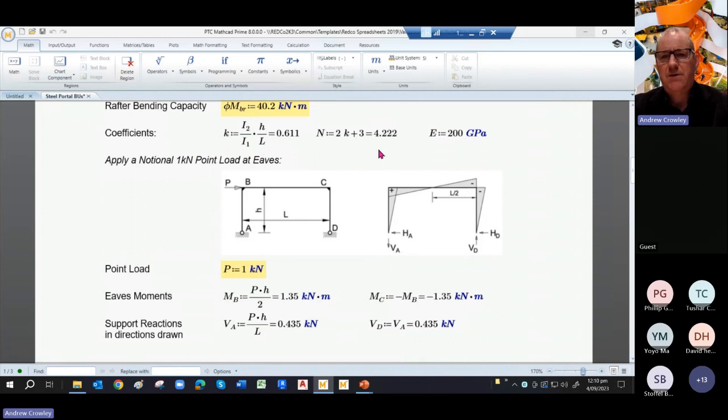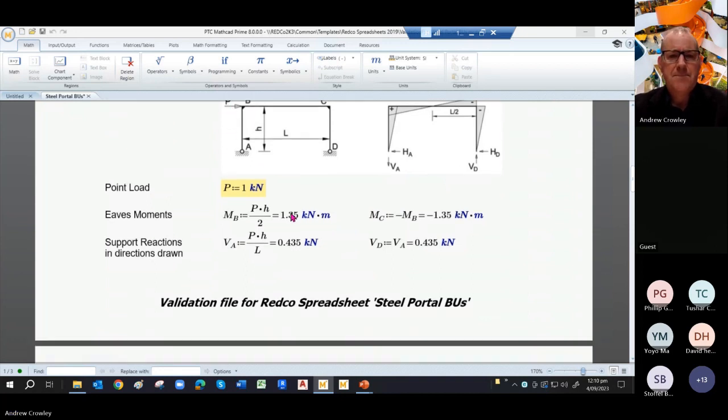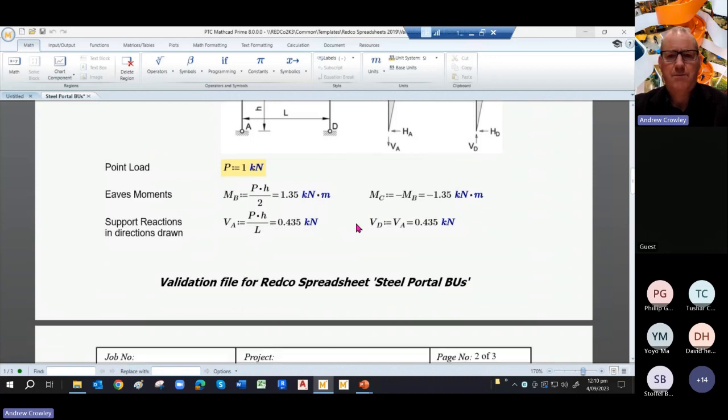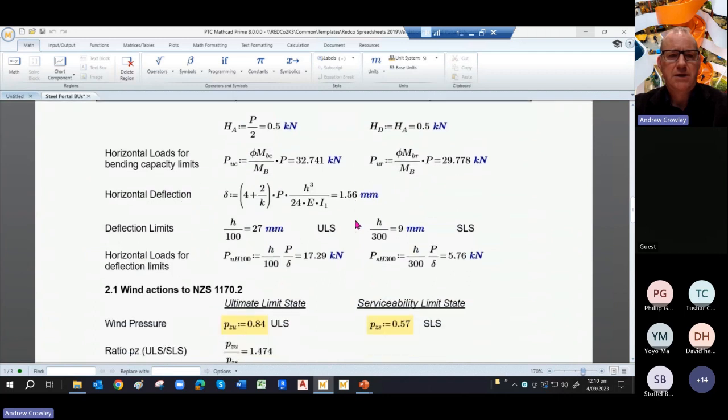So I'm scrolling down. These coefficients come from Klein-Logal tables. So we start with a notional one kilonewton point load at eaves and apply that like so. Given that one kilonewton point load, you derive an eaves moment MB and a support reaction. So oddly enough, both of these moments are the same but handed, as you can tell from the bending moment diagram.